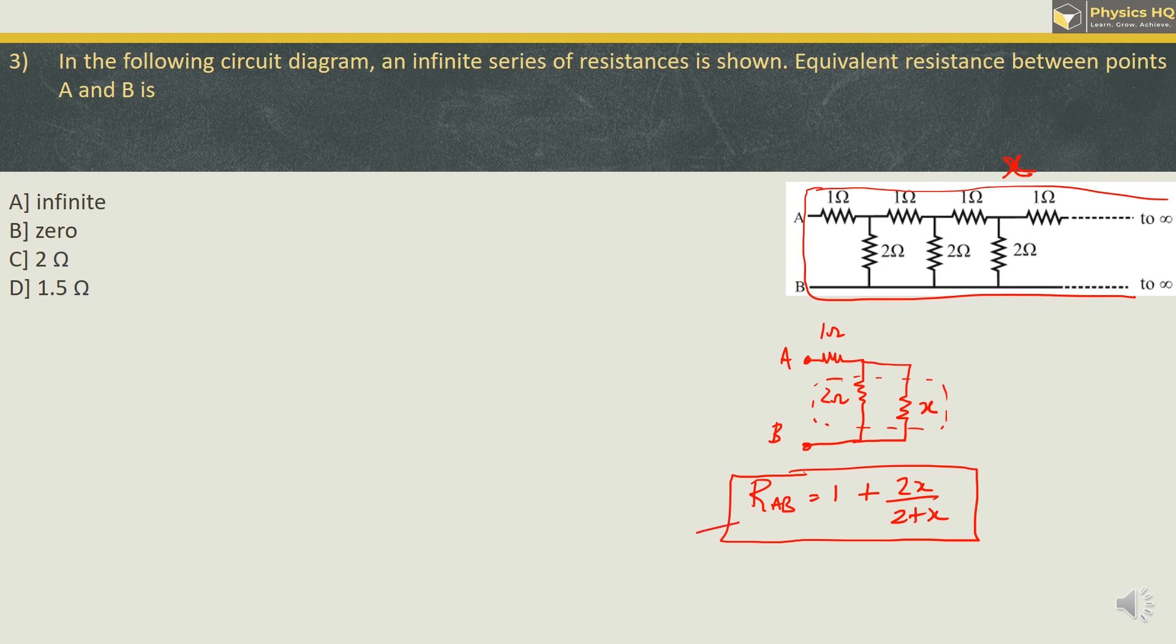What we can say is that even this part if we include in the network, this will also be having the resistance X. So if we put that value over here, what we get is X is equal to 1 plus 2X upon 2 plus X. If we try to simplify this, X is equal to 2 plus X plus 2X divided by 2 plus X. Let us cross multiply. We will have 2X plus X square, this is equal to 2 plus X plus 2X is 3X. Let us take it on one side. We will have X square plus 2X and minus 3X from the other side will give us minus X minus 2, this is equal to 0. We can write this in the form of X minus 2, X plus 1 equal to 0.